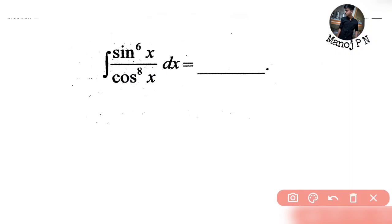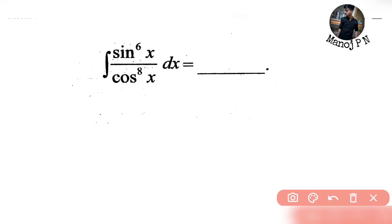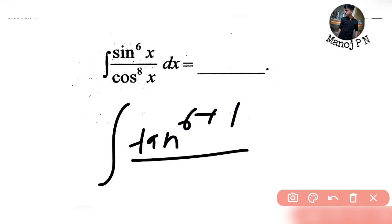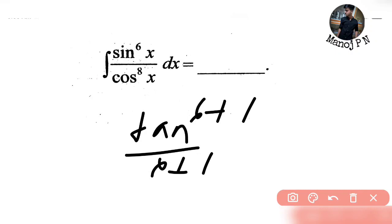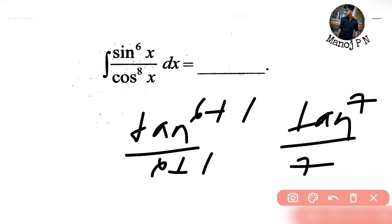What do you do? The integration of tanⁿ x is tanⁿ⁺¹ x divided by (n + 1). Direct answer: tan⁷ x divided by 7. This is your answer x plus C, where C is the integration constant.